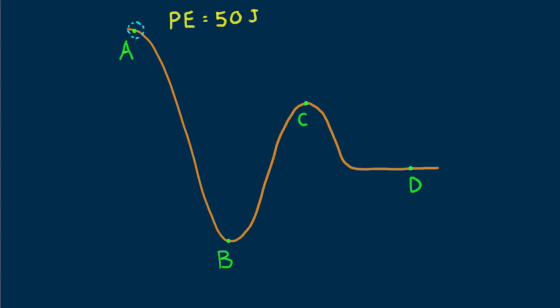Suppose at point A the bead is at rest with a potential energy of 50 joules. That's 50 joules with respect to lowest point B below. That means that at point B its potential energy is zero.